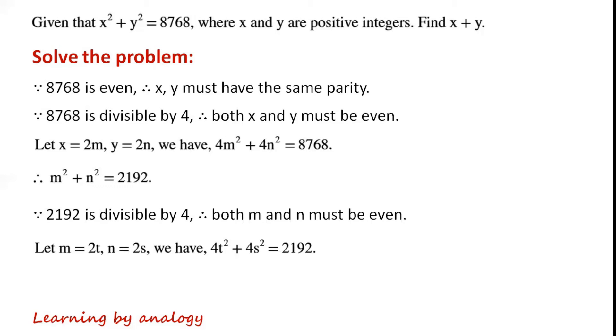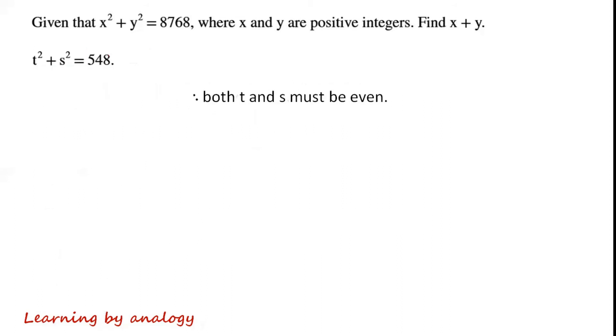Let m equal 2t, n equal 2s, we have 4t squared plus 4s squared equals 2192. So t squared plus s squared equals 548. Because 4 divides 548, so both t and s must be even.